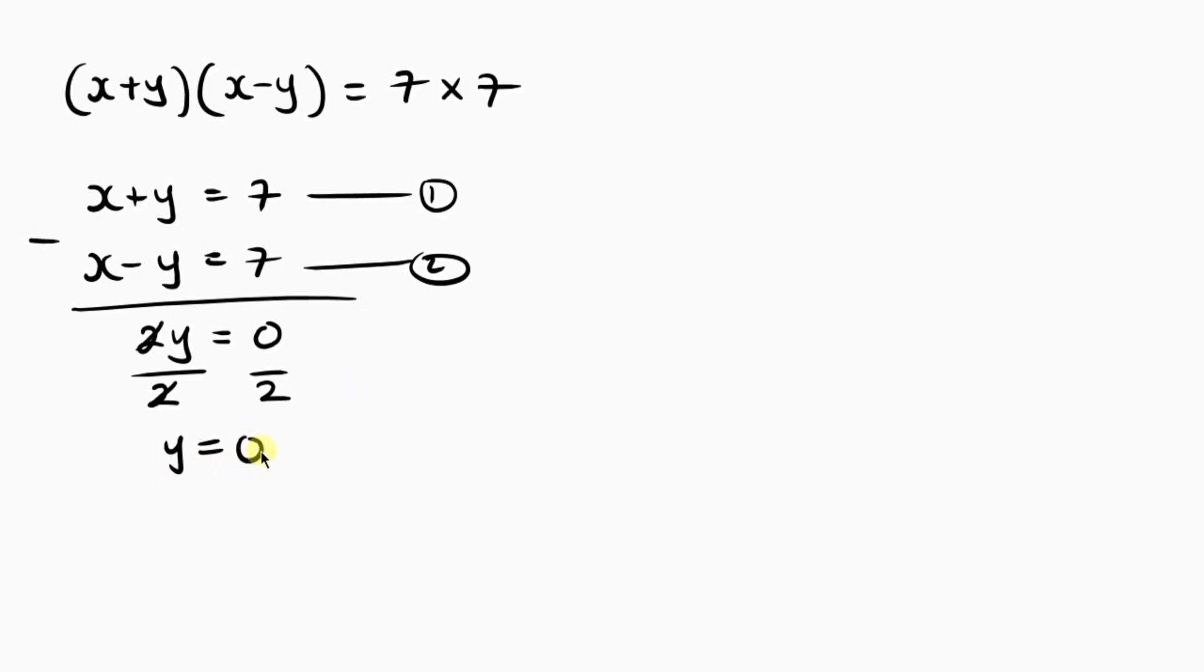And now, let's put this value of y in any of this equation so that we get the value for x. So I choose equation 1 as well. So I have x plus, in place of y I'm going to be putting 0 there, equal to 7. So 0 does not mean anything. So that means I'm going to be writing x, ignoring the 0, equal to 7. So in this Case 2, we have x to be equal to 7 and y to be equal to 0.